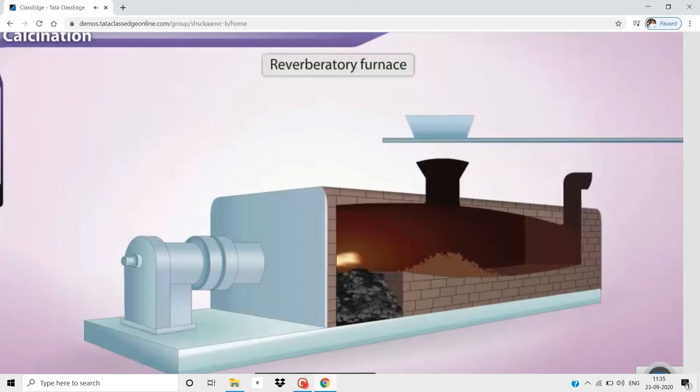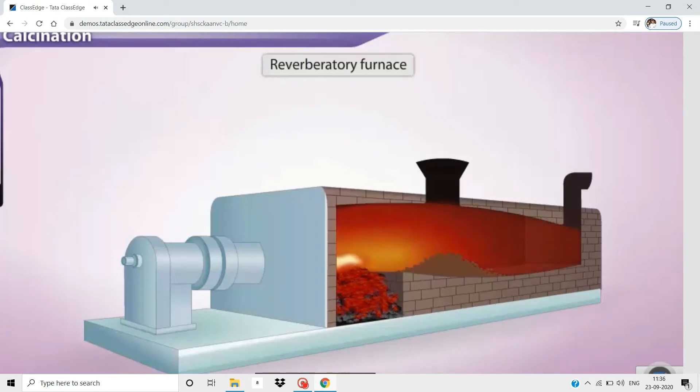The burning coal present in the furnace increases the temperature inside. The ore is subjected to this high temperature in a limited supply of air. As the ore gets heated sufficiently, moisture and volatile oxides from the ore evaporate, and the ore becomes porous.